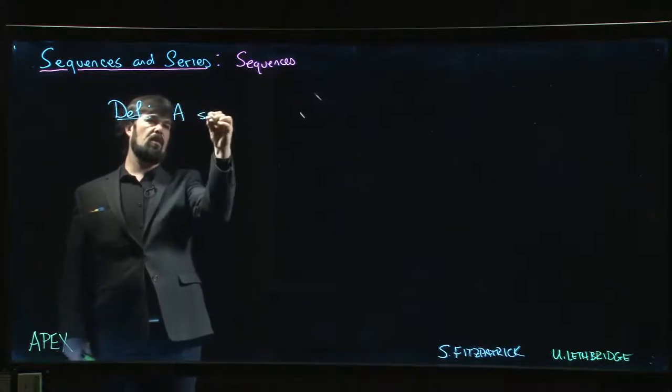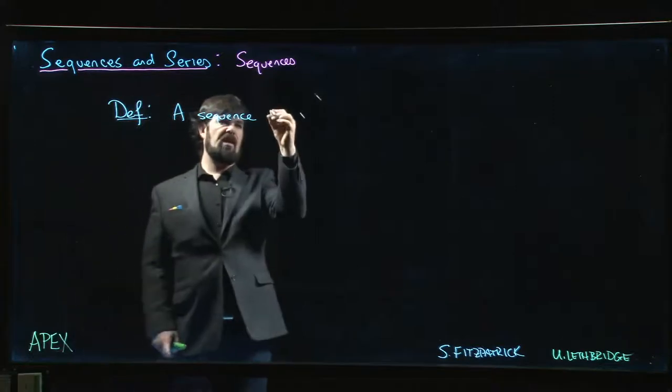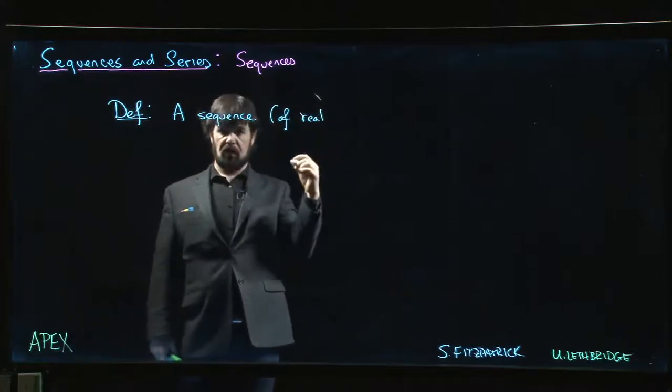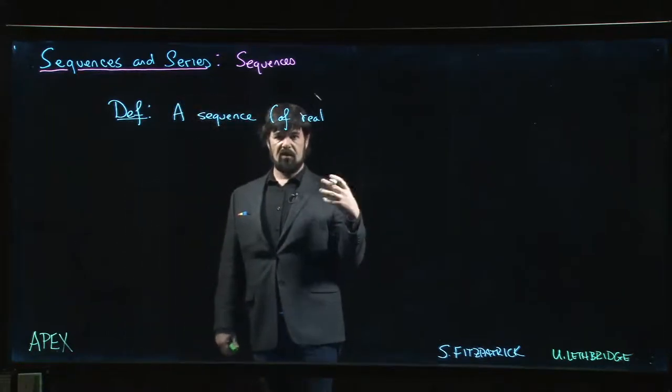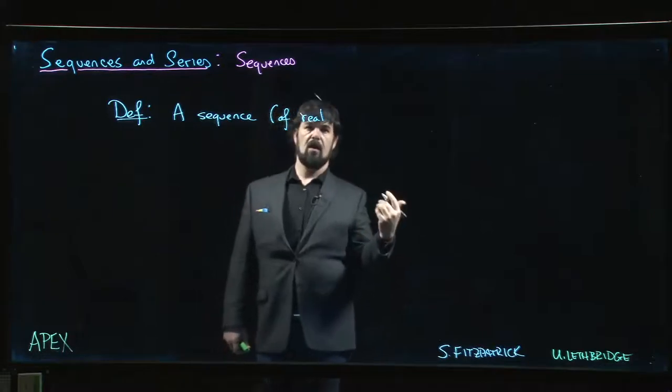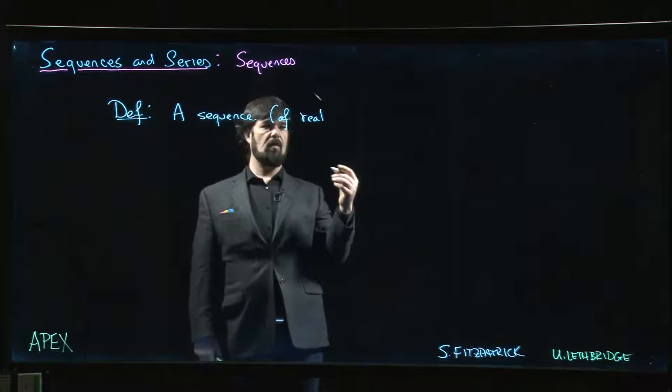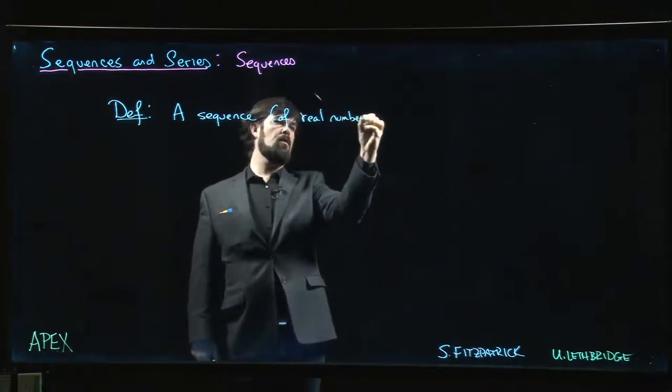Okay, so there are a number of ways of defining a sequence, but the kind of definition that most people tend to give is the following. So a sequence, and I guess we should say, we could consider sequences of other numbers, we could consider sequences of complex numbers, we could even consider sequences of functions, matrices, vectors, there's lots of things that you can put into a sequence. But right now, we're just looking at sequences of real numbers.